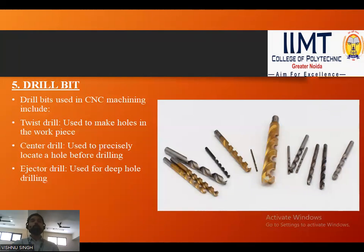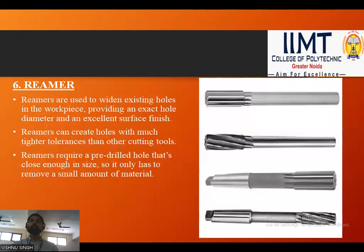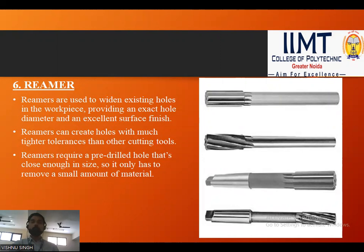Next is the drill bit. Drill bits used in CNC machining include twist drills, center drills, and ejector drills. After that comes the reamer. Reamers are used to widen existing holes in the workpiece, providing an exact hole diameter and an excellent surface finish. Reamers can create holes with much tighter tolerances than other cutting tools, and they require a pre-drilled hole close to final size so only a small amount of material needs to be removed.